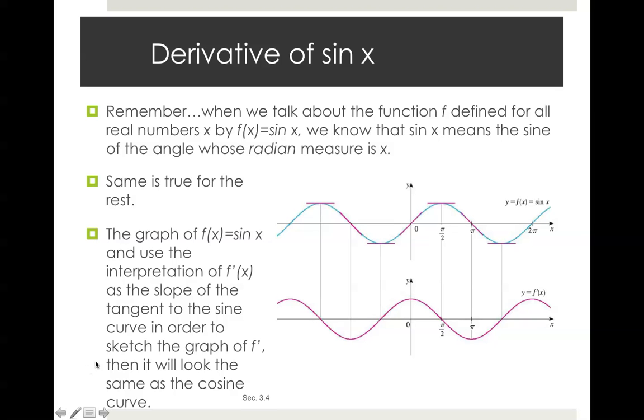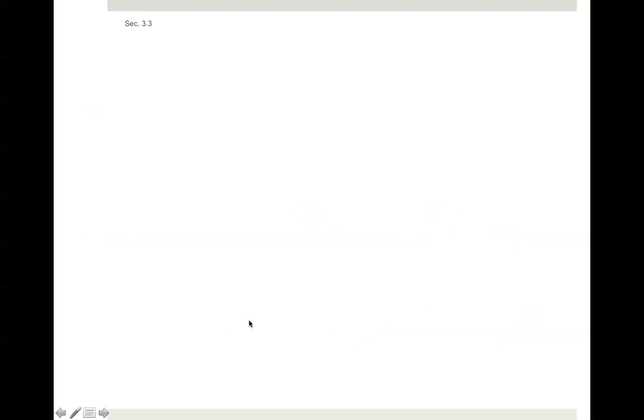Same is true for the rest, which means cosine and tangent. The graph of sine of x is shown right here. We can take the derivative of that, which means these parts where it's 0 is where it's going to correspond to a cross. Since this goes down, this is negative, so this is below. This again corresponds to a 0, and this is graphed just as the other graphs that we've covered in previous sections on graphing the derivative. It will look the same as the cosine curve.